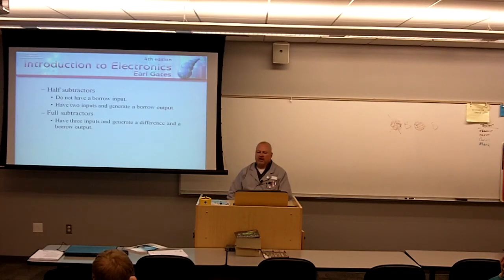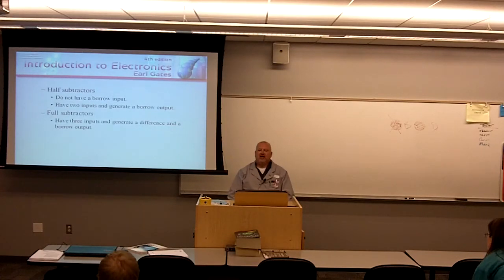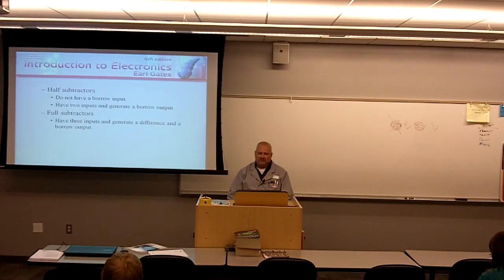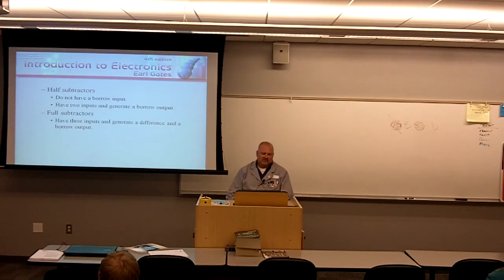Half subtractors do not have a borrow input. Where can you be borrowing from if you're the most significant digit in a number? It's going to have two inputs and generate a borrow output — you're always going to generate that borrow. Full subtractors have three inputs and generate a difference and a borrow output. The difference is what the difference of the two numbers is, and the borrow if you need to do that. Simple subtraction.